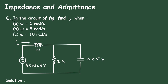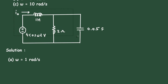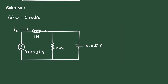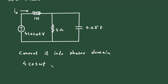Solution. First we will solve for omega equal to 1 radian per second — this is Problem A. We will copy the given circuit and find its impedance. The circuit is given in time domain format; we will convert it into its equivalent phasor domain format. Here, 4 cos(ωt) volts becomes 4 at angle 0 degrees volts. This is Vs.